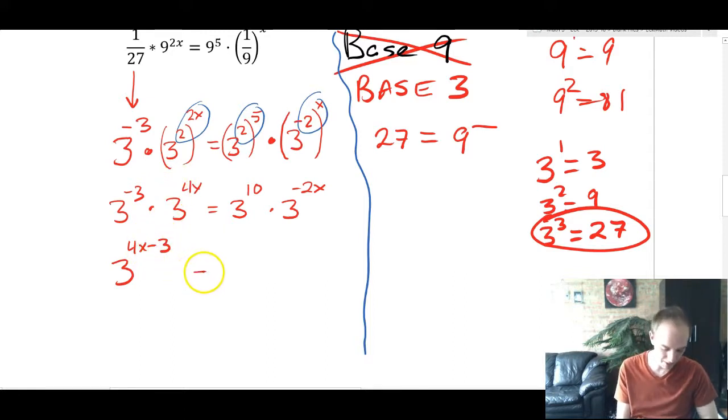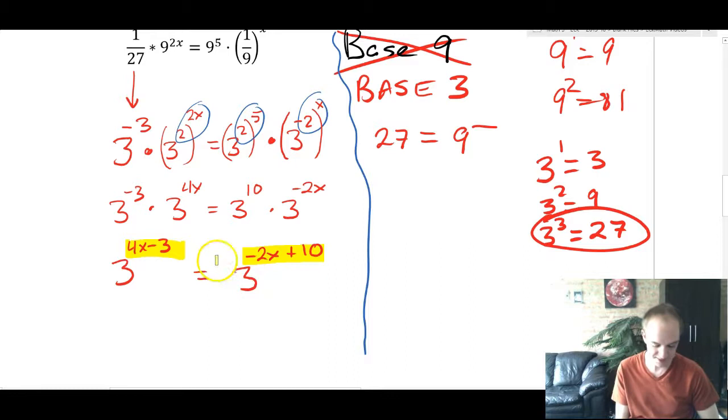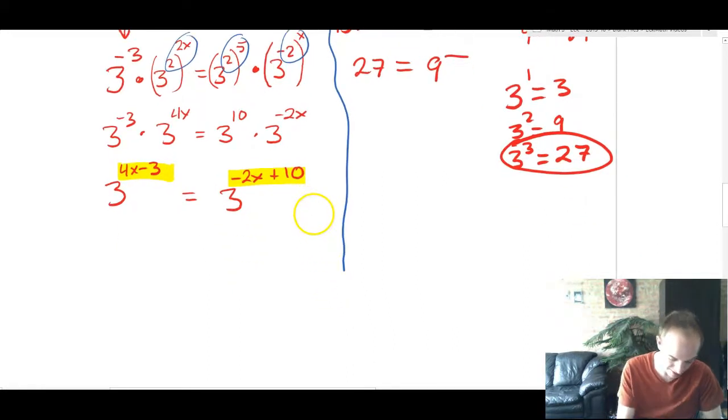Our brains kind of see it better that way. And same here. This is 3^(-2x + 10). You don't have to flip the order, but it helps me see what to do next. Now I see I've got matching bases. And so I'm going to set the exponents equal. So those are just going to come straight down. I'm going to say 4x - 3 = -2x + 10.